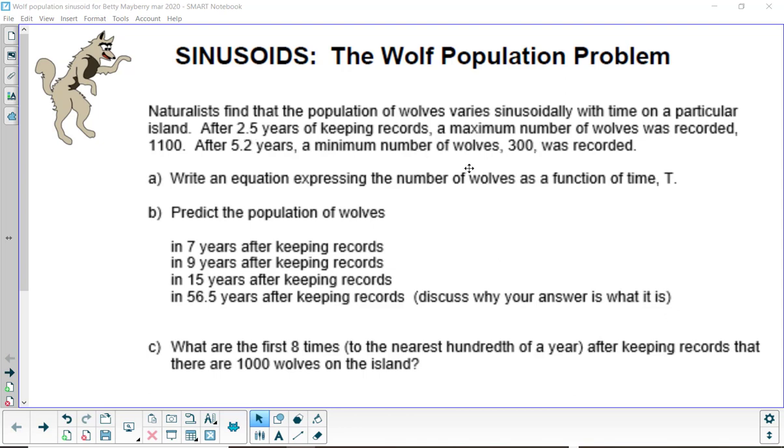Naturalists find that the population of wolves varies sinusoidally with time on a particular island, meaning it goes up and down regularly. After two and a half years of keeping records, a maximum number of wolves was recorded, 1,100, and 5.2 years, a minimum number of wolves, 300, was recorded. And with that, we should be able to answer all these questions.